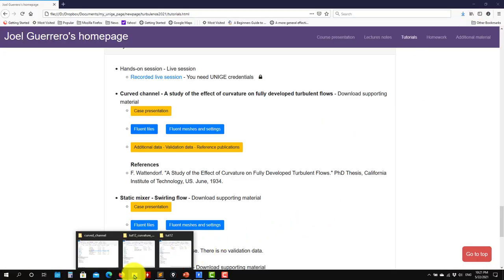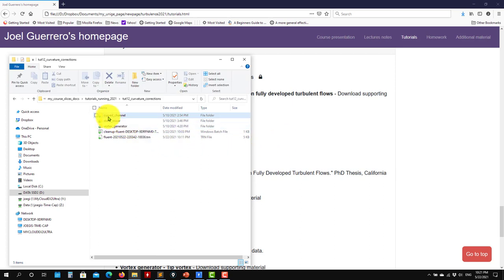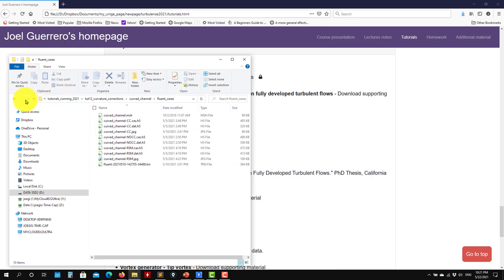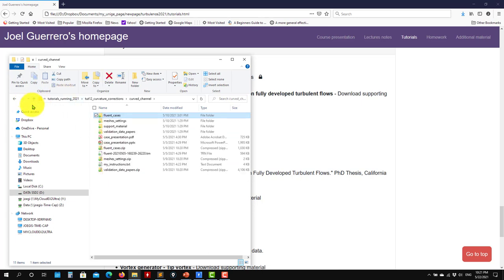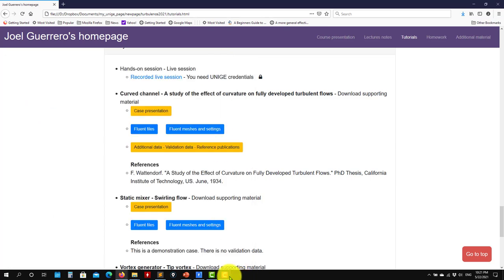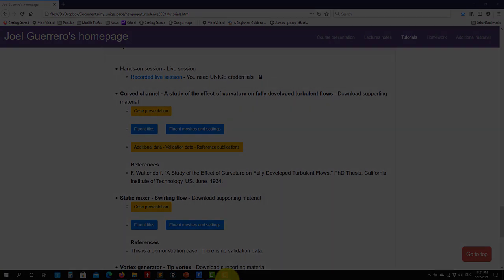And remember, when you download the cases, you're going to have the curved channel. Then fluent cases, you have different cases there. This is a very inexpensive case, you have meshes and validation data and papers. So that's all for the moment. See you next video. Bye.